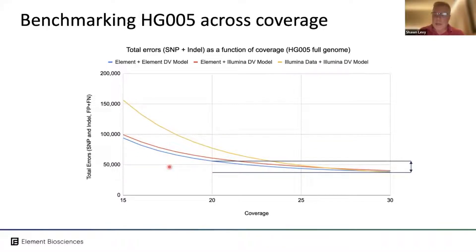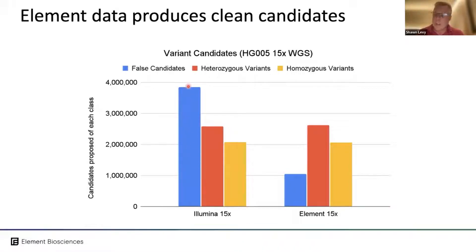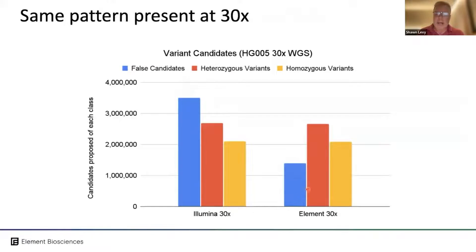Looking at HG005 again at 15x WGS — this analysis was also performed by Andrew Carroll at Google and recently presented at the AGBT conference — you're looking at heterozygous calls in red and homozygous calls in yellow. The accurate calls for the two platforms are quite similar, but the difference is in false candidates: at 15x coverage, Illumina shows a large number of false candidates while Element shows a relatively small number. To be fair, many of Illumina's false candidates will be filtered during VCF filtering, but it is still a significant amount of data in the raw calls.